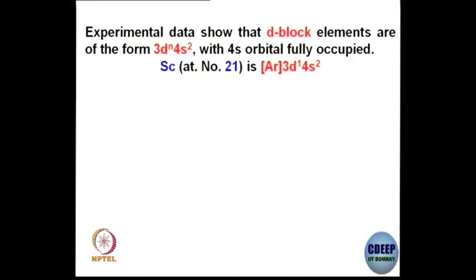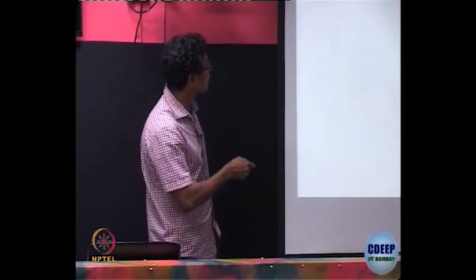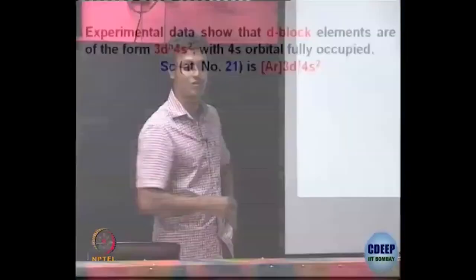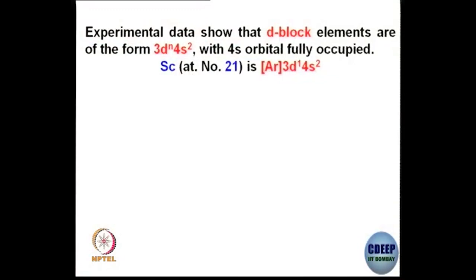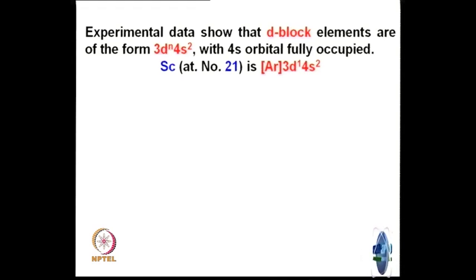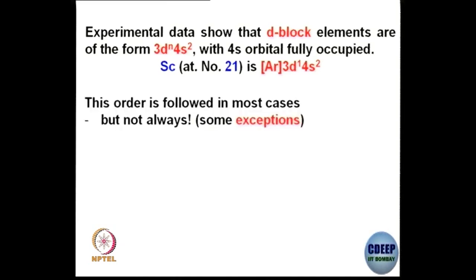Experimental data show that D block elements are of the form 3dⁿ 4s². That means 4s electrons are filled preferentially, with the 4s orbital fully occupied. For example, scandium (atomic number 21) has the electronic configuration: [Ar] 3d¹ 4s². For titanium, it would be 3d² 4s², and so on. This order is followed in almost all cases — 4s² electrons are placed first, and then the remaining electrons go into the 3d orbitals.